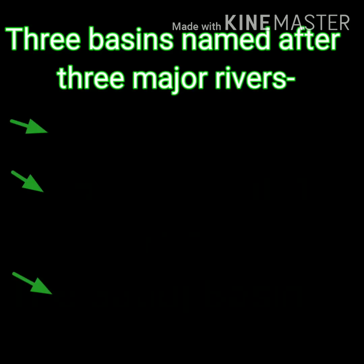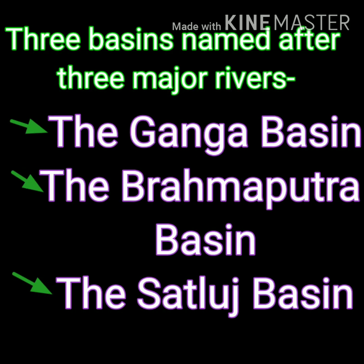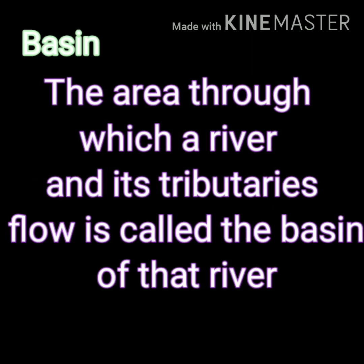Our next topic is the river basins of the Northern Plains. The Northern Plains consist of three basins, named after three major rivers: the Ganga Basin, the Brahmaputra Basin and the Sutlej Basin. The area through which a river and its tributaries flow is called the basin of that river.